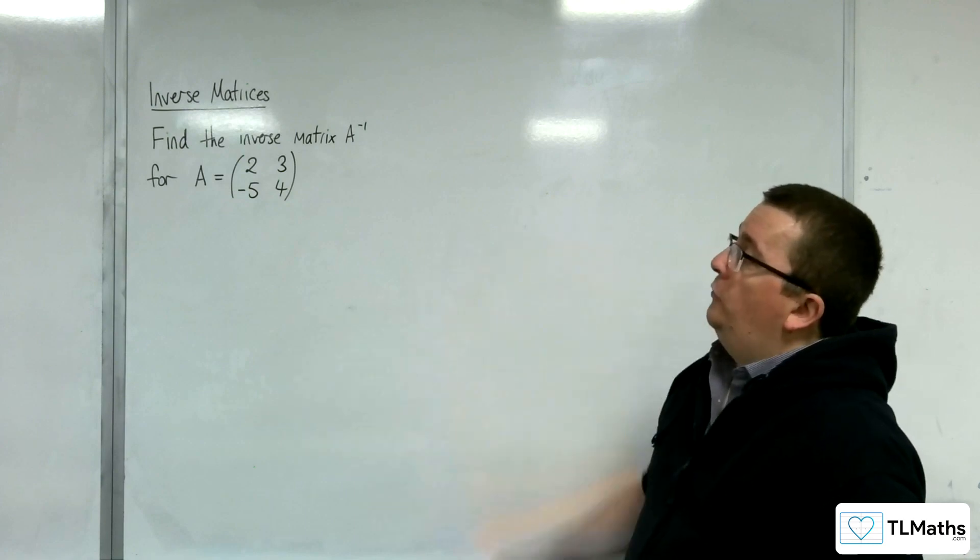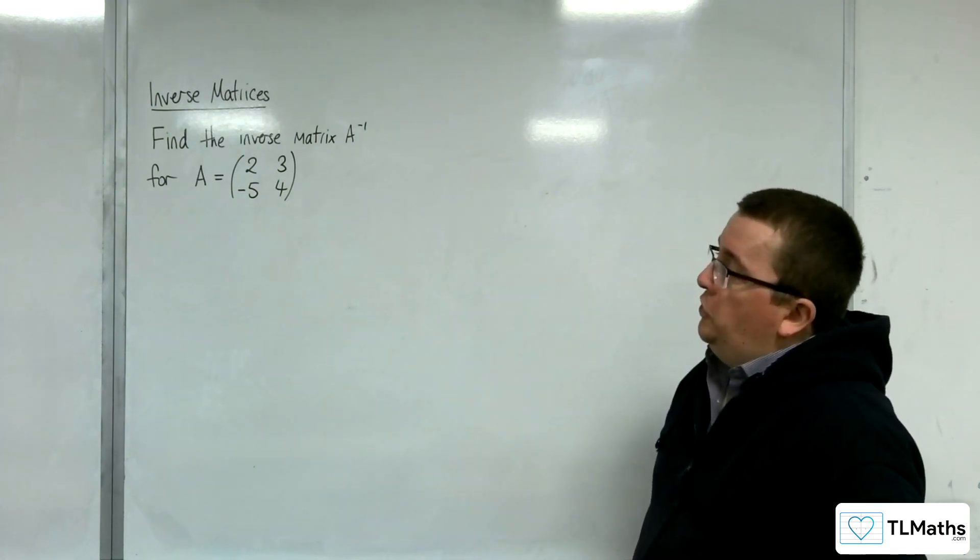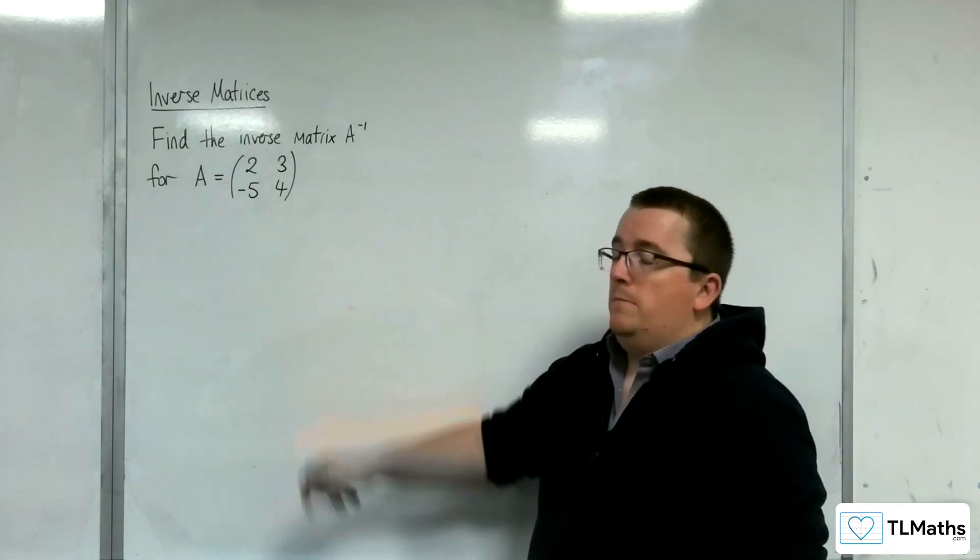So here we need to find the inverse matrix of this 2 by 2 matrix A: 2, 3, -5, 4.